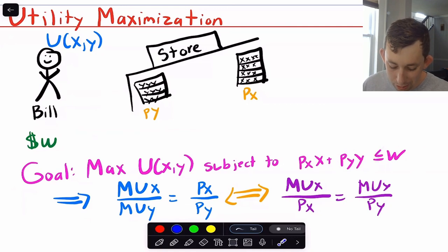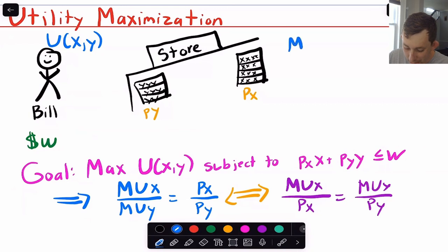So again, if we're thinking about marginal benefit and marginal cost, what we're going to say is that for Bill, he's got two goods, so we have two marginal benefits and two marginal costs. So for good one, or good x, the marginal benefit is just the marginal utility, which is the extra utility Bill gets from getting one more x. So that's got to equal the marginal cost, which for Bill is just the price of that good.